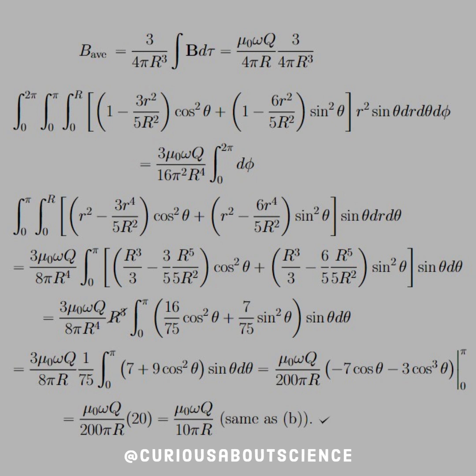So we get some constant times the integral, which was a three-dimensional integral of a sphere. So 0 to 2 pi, 0 to pi, 0 to capital R for dr, d theta, d phi, with the R squared sine theta as our Jacobian measure.